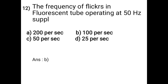Question 12: The frequency of flickers in a fluorescent tube operating at 50 Hz supply is: A - 200 per second, B - 100 per second, C - 50 per second, D - 25 per second. The answer is option B: 100 per second.